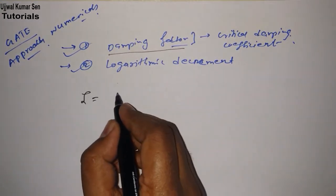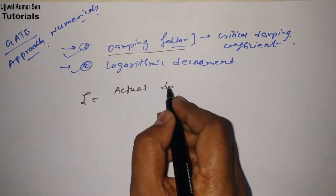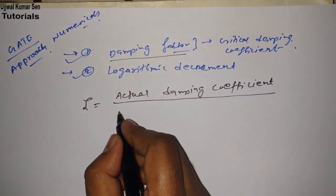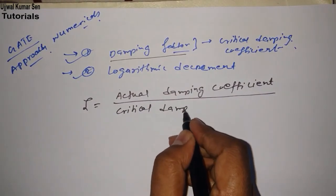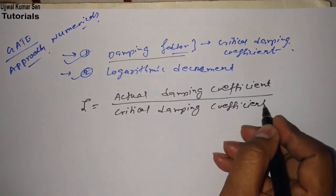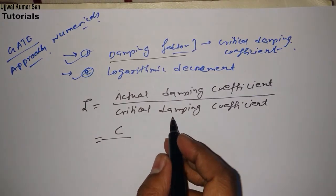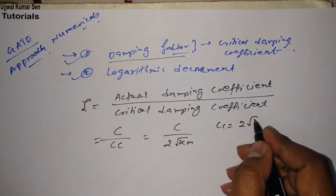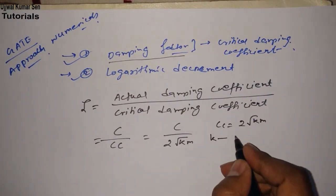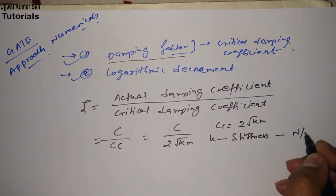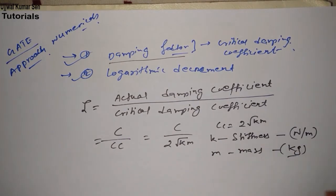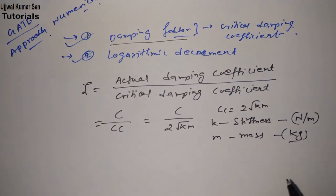So what is basically damping factor? It is denoted by zeta and its ratio is actual damping coefficient to critical damping coefficient. Actual damping coefficient is denoted by c and critical damping coefficient is denoted by cc. Further we can write this as c divided by 2 root km, where k is stiffness with unit newton per meter and m is mass with unit kg.